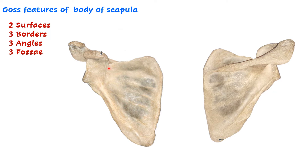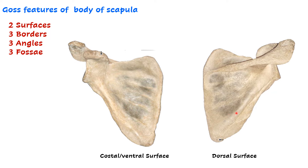Now let us look at the body of the scapula. You will be asked the surfaces, the borders, the angles, and the fossae of the scapula. There are two surfaces. The first is the costal or ventral surface, which comes in contact with the ribs and is directed anteriorly — it is slightly concave in nature. The second is the dorsal surface, which is divided into two parts by the presence of the spine of the scapula.